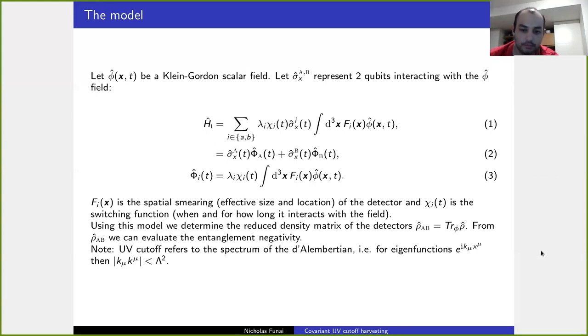Basically, if we consider the eigenfunctions of the d'Alembertian, e to the i k mu x mu, then that will be providing a cutoff for the magnitude of k mu. That plays a role with virtual particles, virtual excitations, rather than actual physical field excitations.